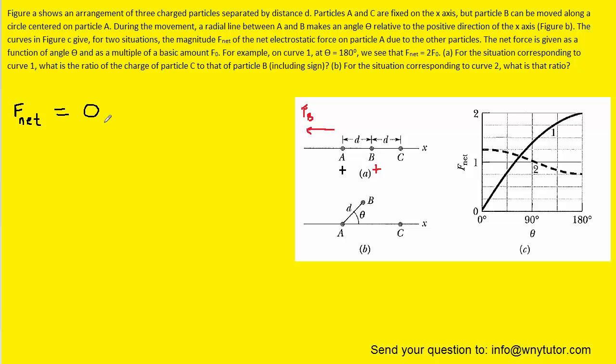Now we know the net force is supposed to be zero. That must mean there's another force counteracting FB pointing to the right, and that's the force that charge C is exerting on particle A. In order to have a force pointing to the right, particle C would have to be negatively charged because that would create the attractive force necessary to pull particle A to the right and balance out the force exerted on the left.